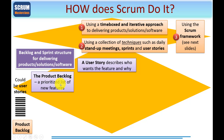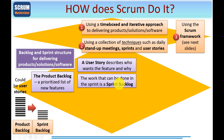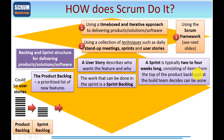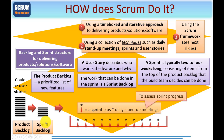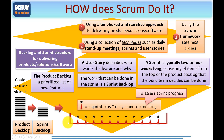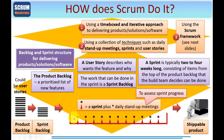The product backlog is a prioritized list of new features — almost certainly in the form of user stories — from which you extract what's known as the Sprint backlog, which is a subset of this. The Sprint backlog consists of those items that you can complete and release early to get early customer benefits. A Sprint is typically two to four weeks long, consisting of items from the top of the product backlog — top in terms of priority — that the team decides can be done from the Sprint backlog. The Sprint framework helps you to complete the products as efficiently and effectively as possible, so you end up with a shippable product.